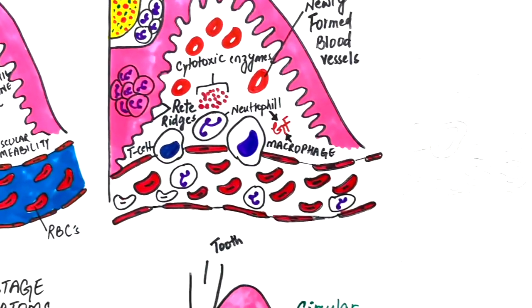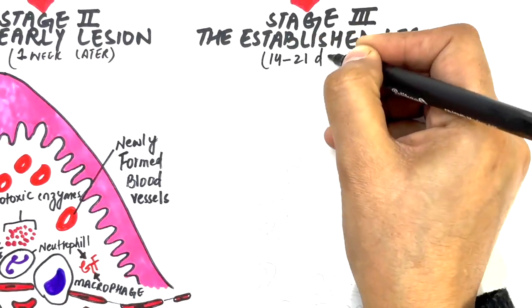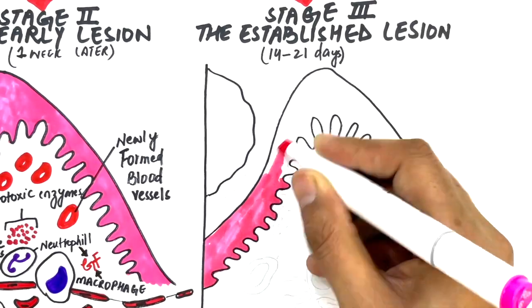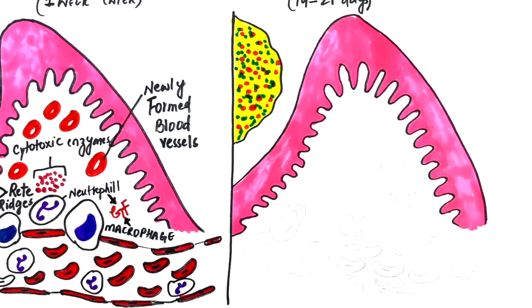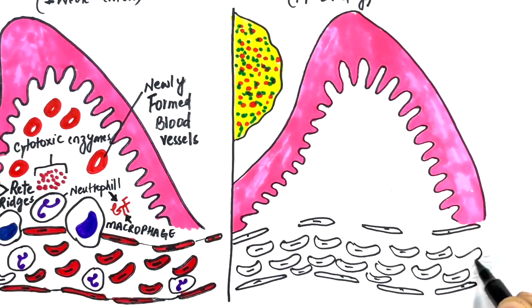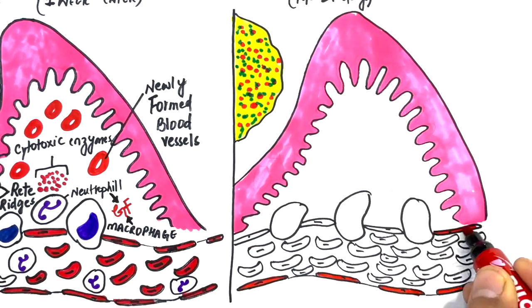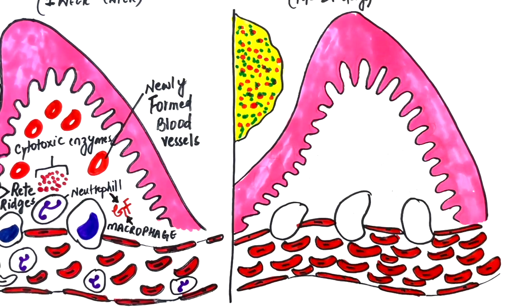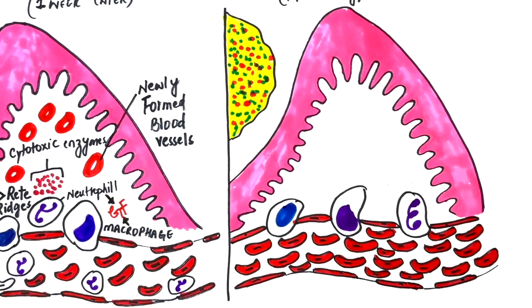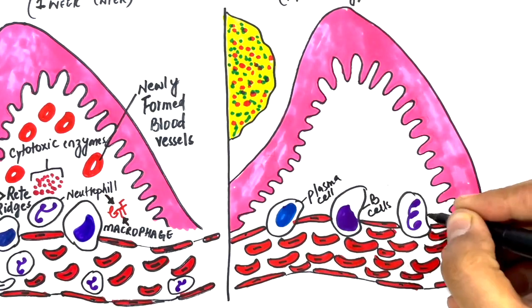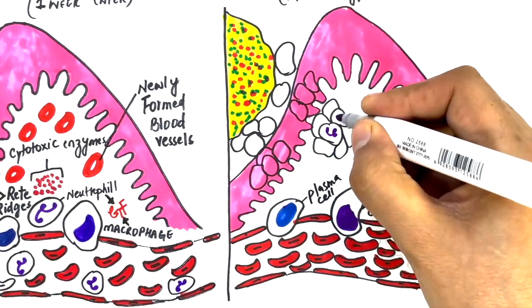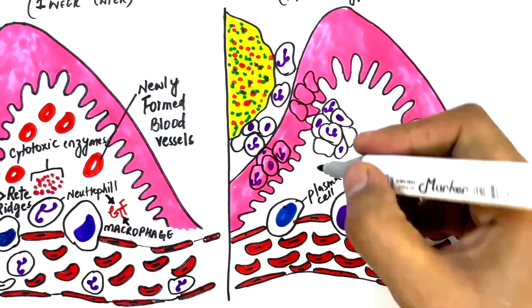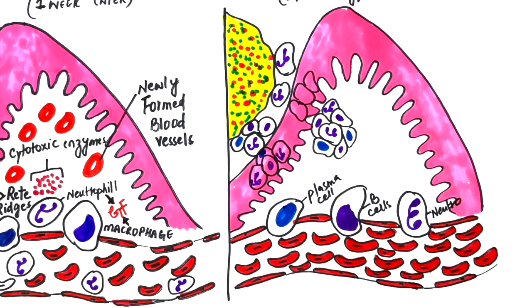Stage 3, or the established lesion, begins 14 to 21 days after the early lesion. This stage is characterized by a huge number of infiltrating immune cells within the gingival tissue. These immune cells are the plasma cells, B lymphocytes, and neutrophils. However, the predominant cells are the plasma cells and B lymphocytes. The cells are condensed all over the gingival tissues, right from the sulcus to the junctional epithelium to the underlying lamina propria and within the gingival fibers.